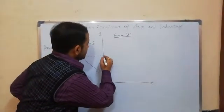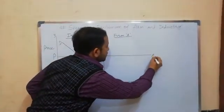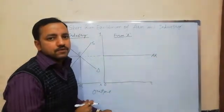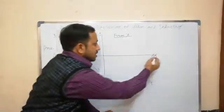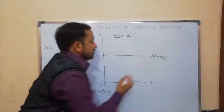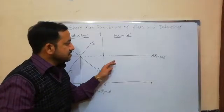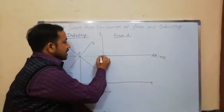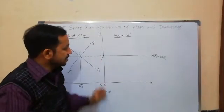The price set by the industry is the average revenue for the firms. Under perfect competition, AR equals MR, so the AR curve and MR curve are the same line, parallel to the X-axis. The price OQ is accepted by Firm A.